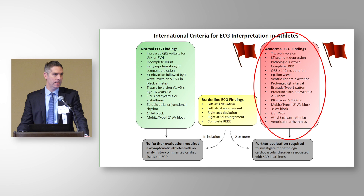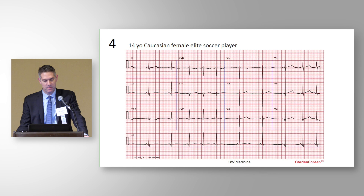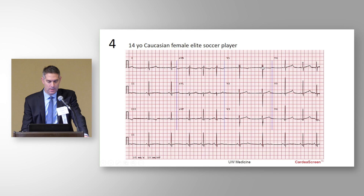Now let's look at some red flags — less commonly encountered but still abnormal ECG findings. This was a patient from our clinic, a 14-year-old elite female soccer player required to get an ECG before trying out for a national team. As I walk through the ECG looking for pathologic Q waves, ST depression, and T wave inversion, I get to lead V4 and the T wave morphology catches my eye, as Mike Ackerman pointed out — a somewhat unusual appearance we'll look at in closer detail.